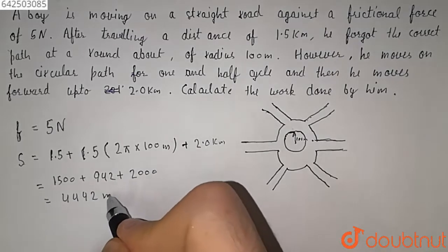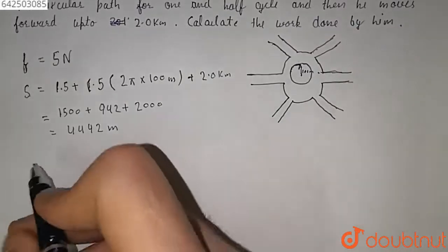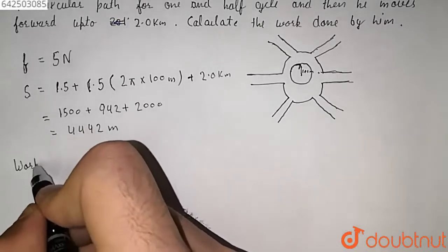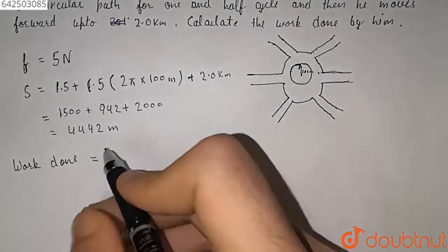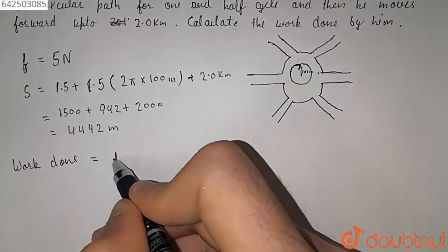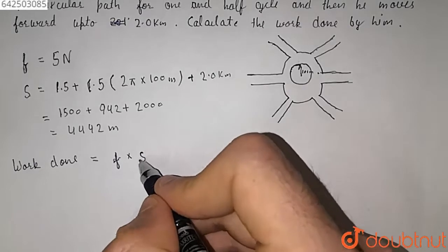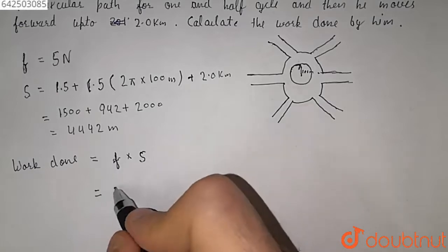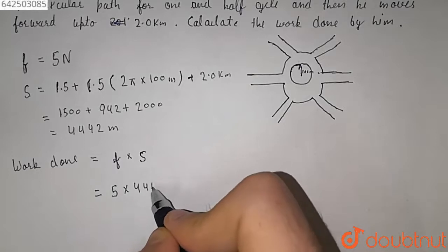4442 meters. So this is the distance, and we have force of 5 Newton. So we know that work done is equal to force, that is f, into displacement, that is S. So it will be equal to 5 Newton into 4442 meters.